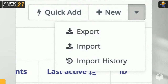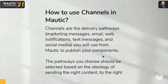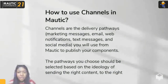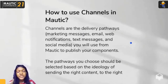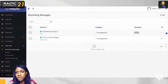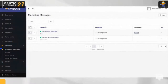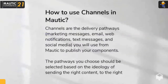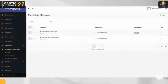Next let's look at channels in Mautic. Channels are delivery pathways for marketing messages — emails, notifications, text messages, and social media — used to publish your company's content. These pathways should be selected based on the ideology of sending the right content to the right customer. On the main menu under channels you have marketing messages, emails, focus items, and social monitoring. To use channels, click New and follow the on-screen instructions.